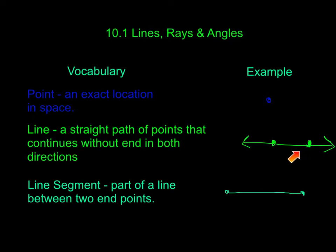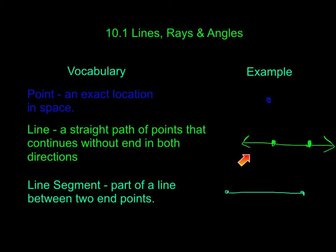These two points are on a line. These two here are at the end of the line, separating a line segment out. A line is a straight path of points that continues without end in both directions. Sometimes we'll have a line with arrows at the end signifying that it continues. Other times the line has no arrows, but it continues through the points rather than ending at them.